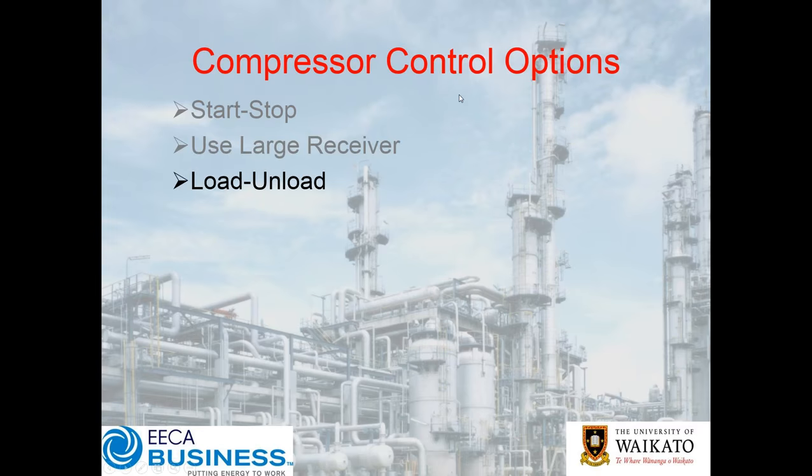You could use a large receiver — a bit like the standard little reciprocating compressor you might have at home in the garage sitting on its receiver, coming on and off. The problem with that is you can only start and stop a motor so many times an hour before it overheats. So generally in an industrial sense, you have a load-unload where the compressor loads but stays running in an unloaded state so the motor doesn't have to start again.